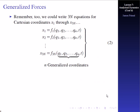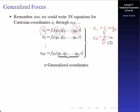Now, if you remember from what we were talking about before, we could write 3n equations for our Cartesian coordinates x1 through x3n as a function of our generalized coordinates, where x1, for example, is equal to some function of q1, q2, all the way through to qn, and then maybe time t. For example, x1 equals q1 sine q2, and x2 equals q1 cosine q2 — this is sort of like polar coordinates, like r and theta.